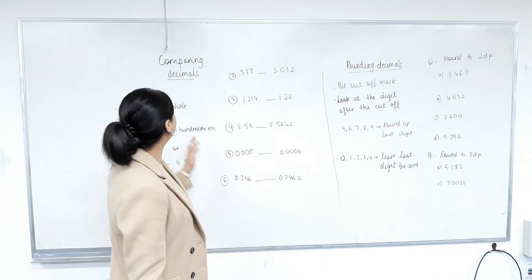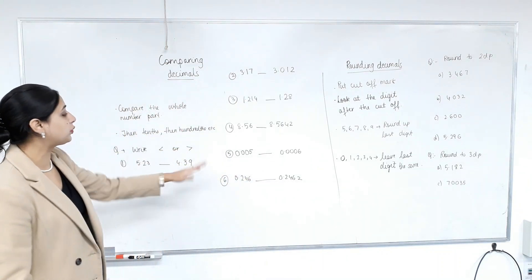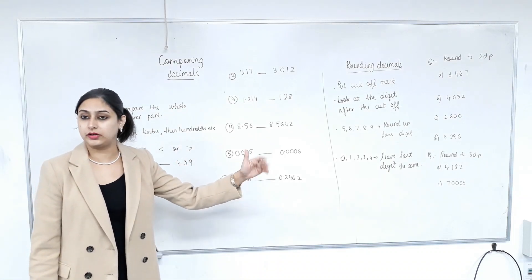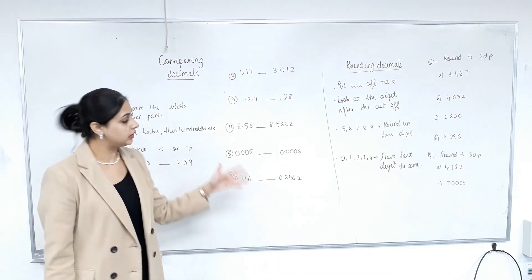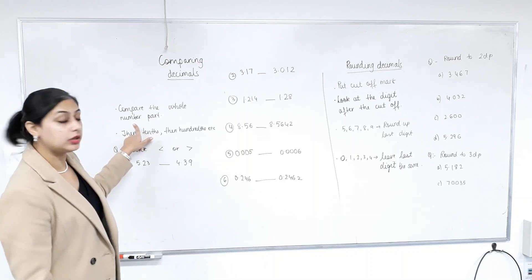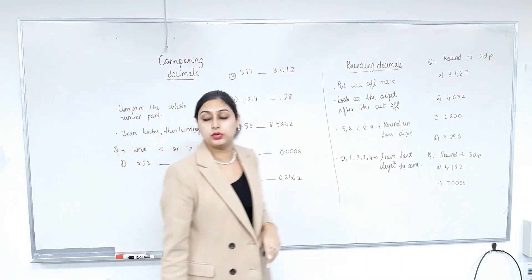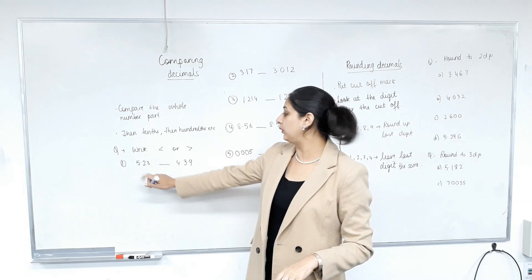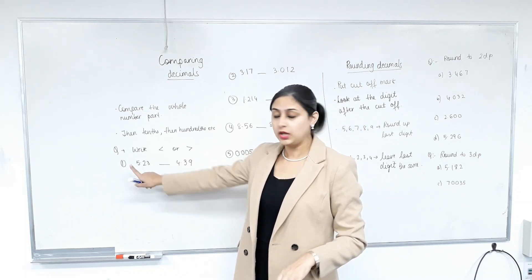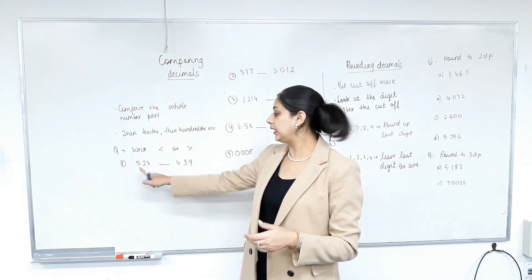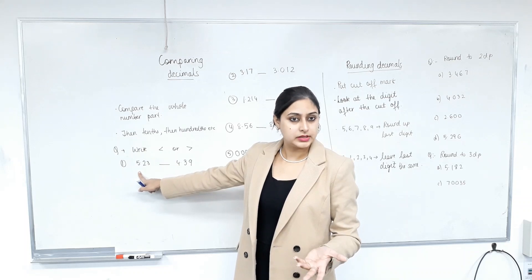Good. Now we're going to compare decimals. So basically we're going to find which one is bigger, which is smaller. Less than, greater than, like we do with numbers. So the rule is we compare the whole number part first. For example, 5.23 and 4.39. What's the whole number part? So clearly this is bigger. Does that make sense?